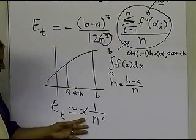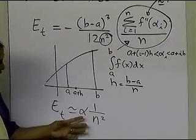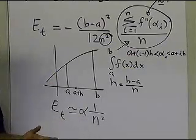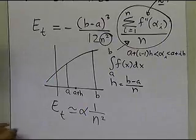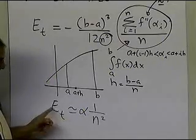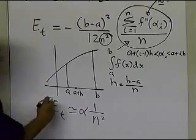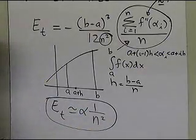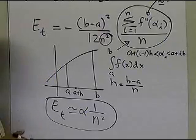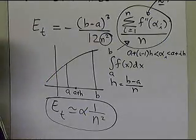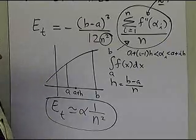This means that if you double the number of segments, your error gets quartered. Intuitively you might think the error would get halved, but it actually gets quartered because the true error is inversely proportional to n squared. To demonstrate this, we will take a particular integral as an example and verify whether the true error does get approximately quartered.